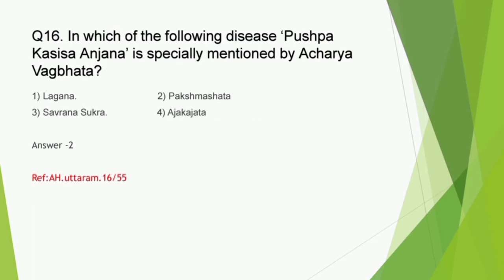Question number 16: In which of the following diseases is Pushpagasisa Anjana specially mentioned by Acharya Vagbhata - Lagana, Pakshmasveda, Savrana Shukra, or Ajagajadha? The correct answer is option 2, Pakshmasveda. Vagbhatacharya has mentioned this yoga in the context of Pilluroga Chikitsa. So this yoga is beneficial for both Pakshmasveda and Pilluroga.